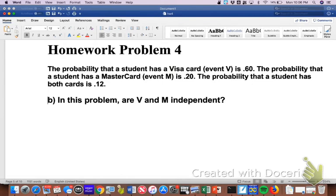Part B of this problem asked us whether or not these events were independent. And remember how we need to do that. We know this from homework problem number three. If we can take the individual probabilities of the kid having a Visa and a MasterCard and multiply those together.